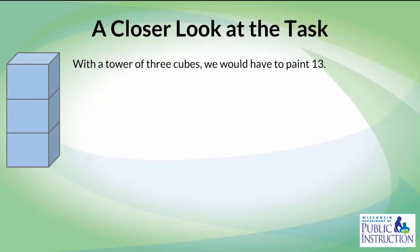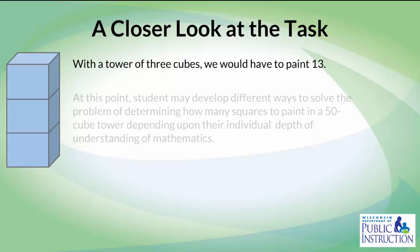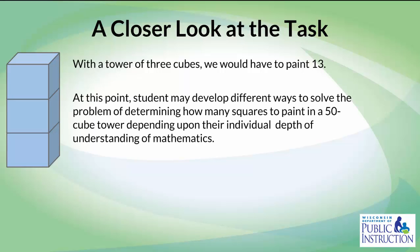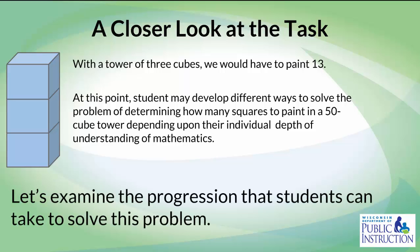With a tower of three cubes, we would have to paint 13 squares. At this point, students may develop different ways to solve the problem to determine how many squares they would have to paint if this tower were 50 cubes high. And that is all going to depend on the individual student's depth of understanding of the mathematics.